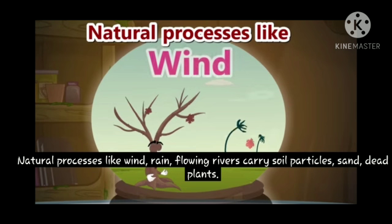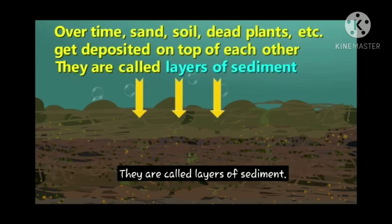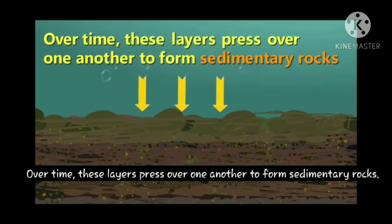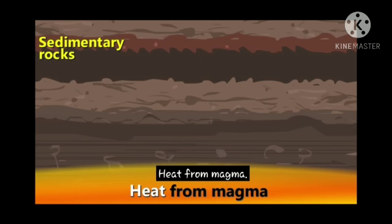Wind, rain, and flowing rivers carry soil particles, sand, dead plants, and these all get deposited on top of each other over time. Sand, soil, and dead plants deposited on top of each other are called layers of sediments. Over time, these layers press over one another to form sedimentary rocks. These rocks take thousands of years to form.